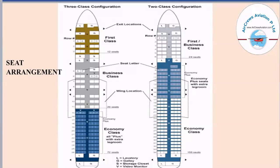In the first class there are a total of 12 seats. In the two-class configuration, the first or business class has 24 seats. In the three-class configuration, the business class has 25 seats. Just after the business class we have the economy class, which is the most basic class that passengers usually prefer, as the tickets are less expensive compared to other classes. In the economy class we have 72 seats.